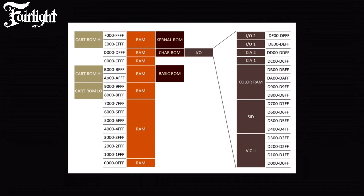At address A000 — you can see it on the screen — is the BASIC ROM. Depending on one of the bits in register 01, you can turn BASIC ROM in or out. All write commands that the CPU does end up in the RAM even if ROM is on top. But if you read, you read from whichever memory bank is switched in. So if you want to write something underneath the BASIC block you can just write ahead — that's fine. But if you want to read from the RAM, you need to switch out the BASIC ROM.